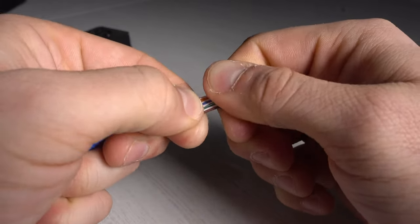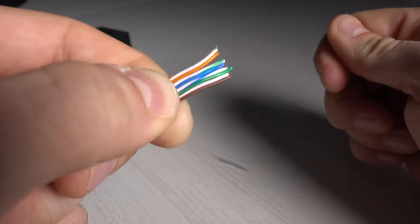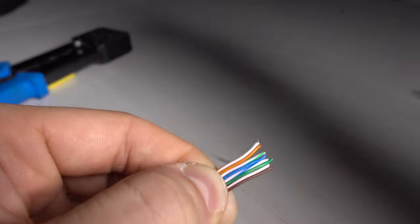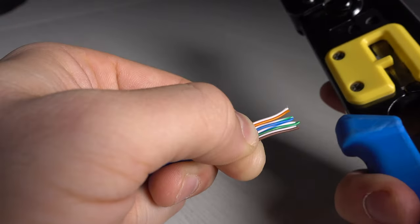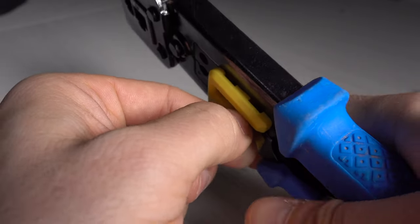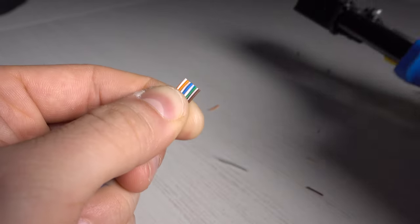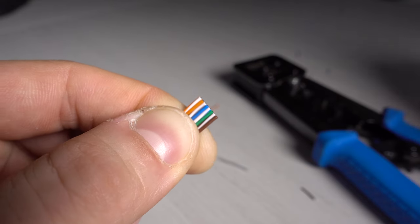And then you have to tighten your cables so they are really perfectly parallel, like this. And then with your crimper, you should have something to cut it, like this. Same distance, all of them.